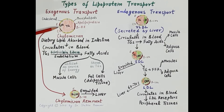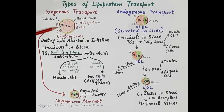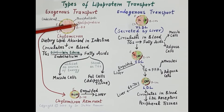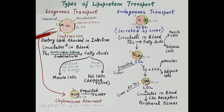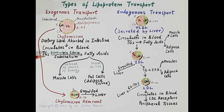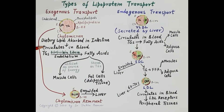The hydrophobic core of a chylomicron consists of approximately 90% triglycerides, shown in red, and a very small amount of cholesterol esters, shown in green. The hydrophilic shell is made up of free cholesterol, phospholipids, and apolipoproteins — mainly apolipoprotein B48, apolipoprotein C2, and apolipoprotein E. These chylomicrons circulate in the blood.